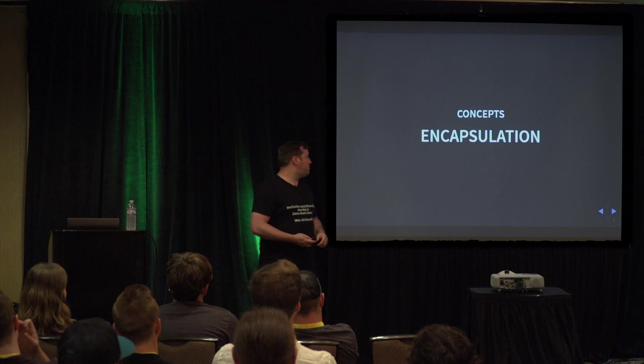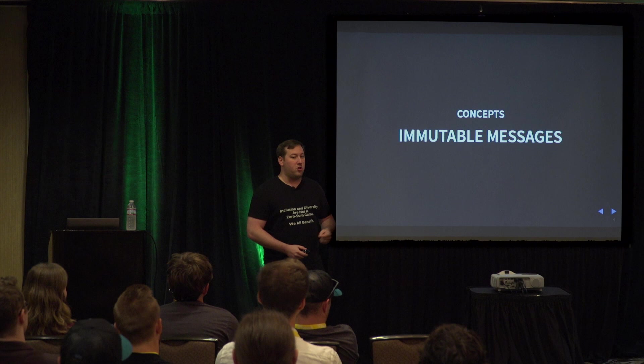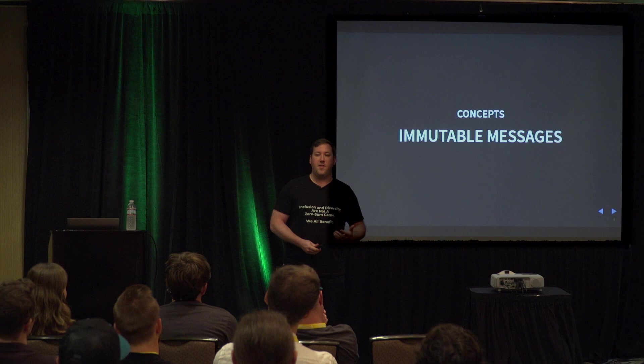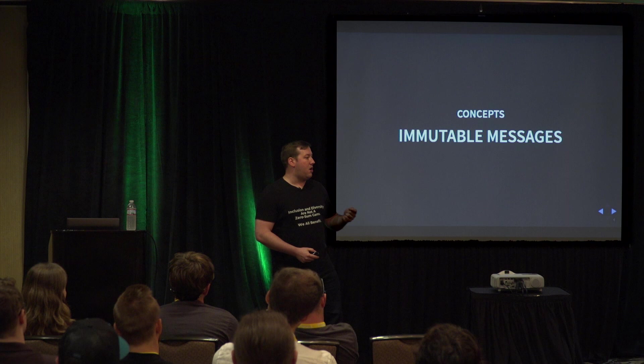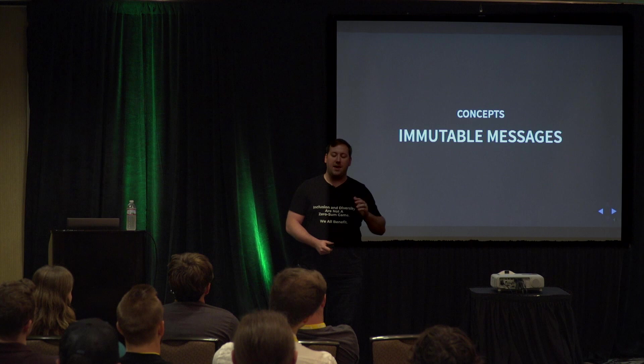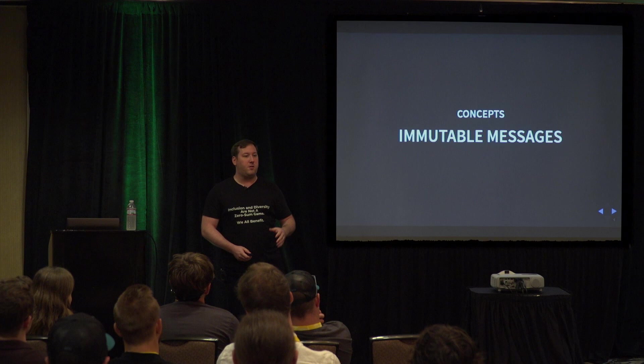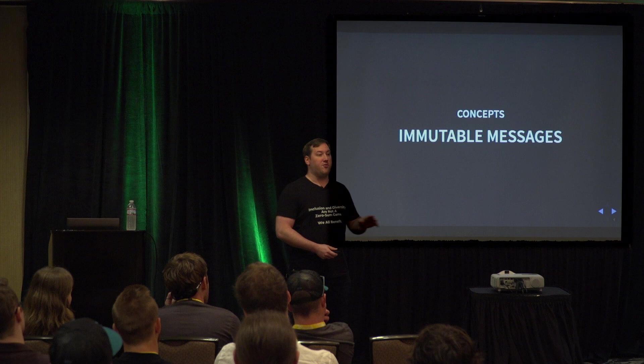Immutable messages are an important concept for Akka.NET. An immutable message is an object whose contents cannot be changed after creation — you can read the properties but you can't modify them. In the actor model, you have a bunch of messages flying around, and you want to make sure you're not going to change properties in transit. In the code examples, messages will always be immutable — passed into the constructor, read-only after that.